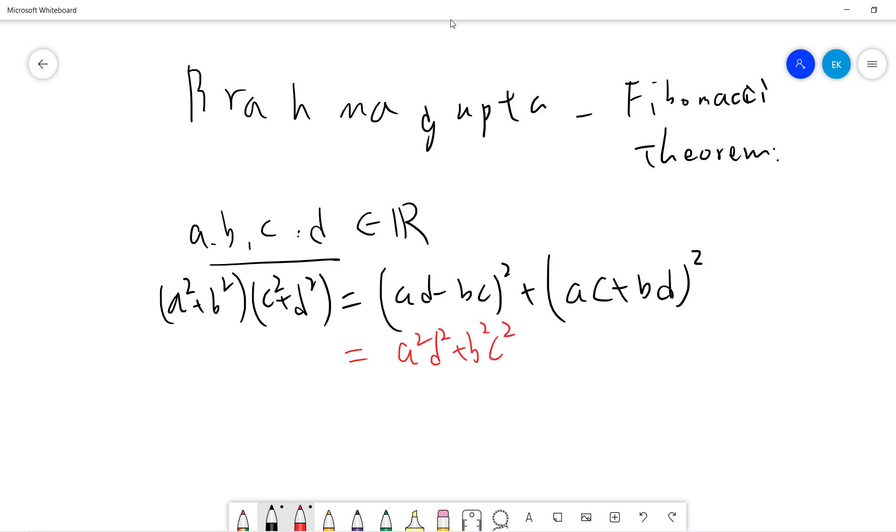And the cross term will cancel because the cross term is both ac·bd times 2.